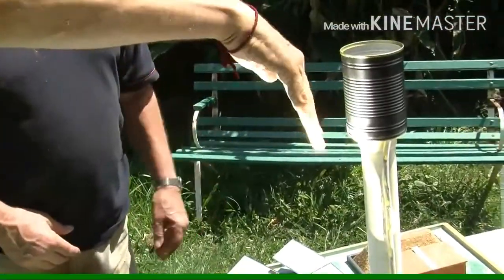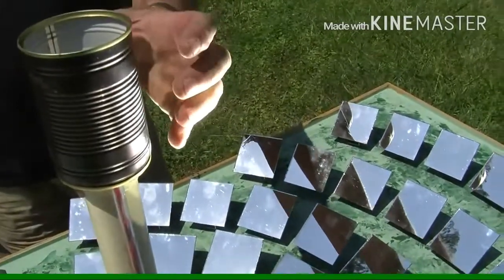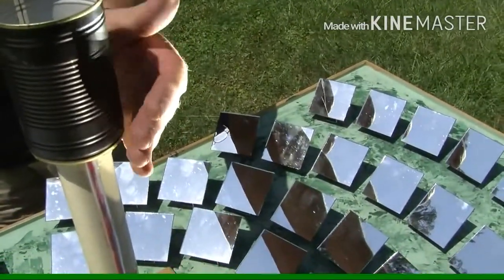Must be getting pretty hot up there. So the way the model works is the mirrors are focused up onto the heat collector at the top, and that gets quite hot. So even just on a little model like this, it gets very hot. And then the heat from that is stored and used to generate electricity.